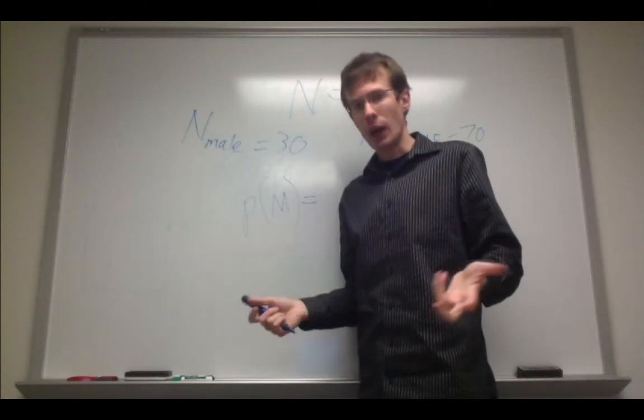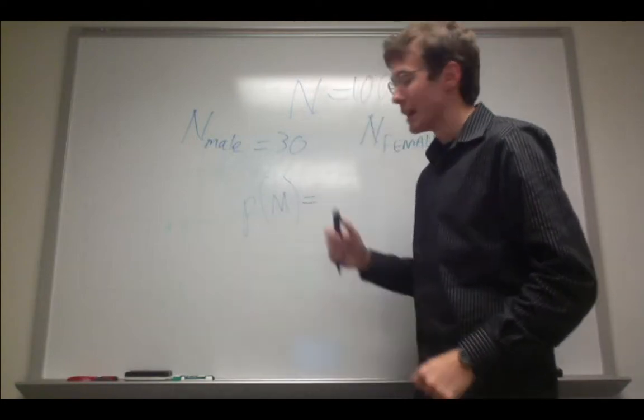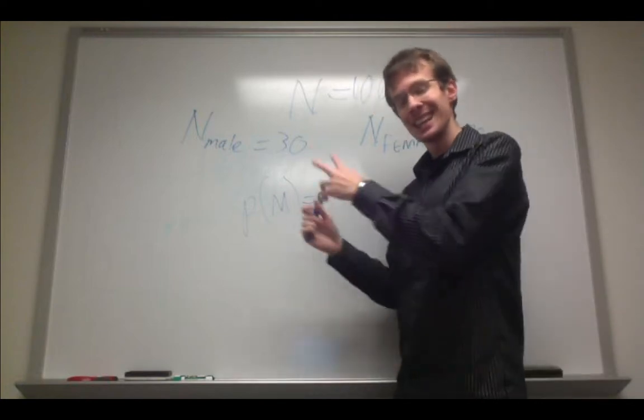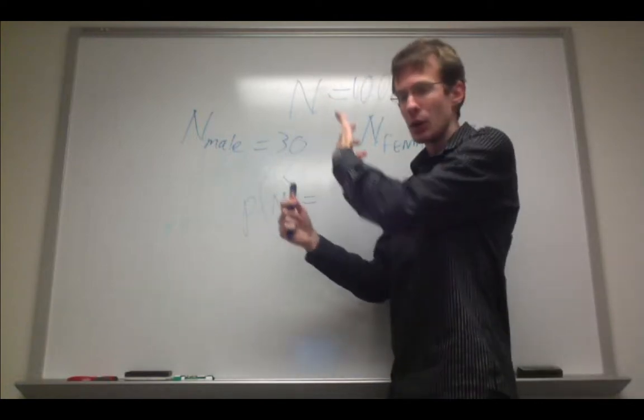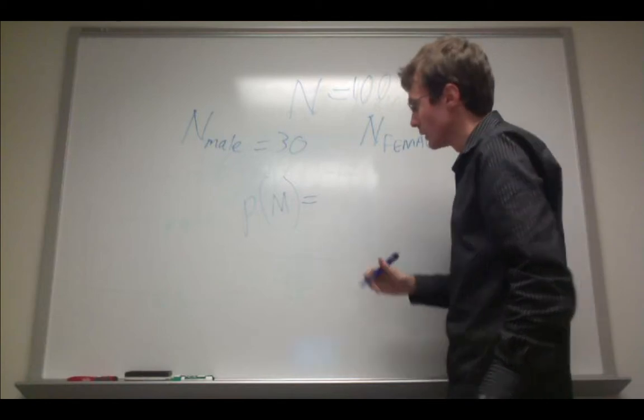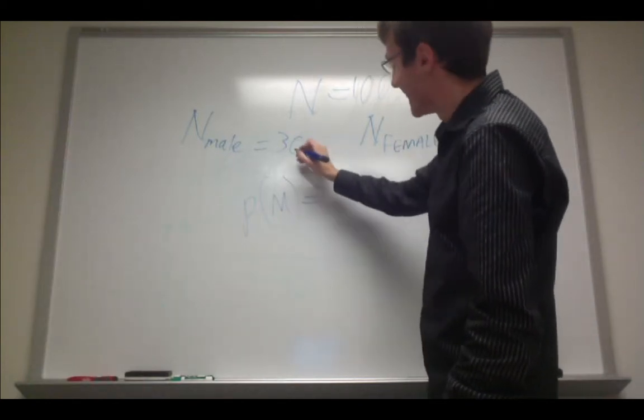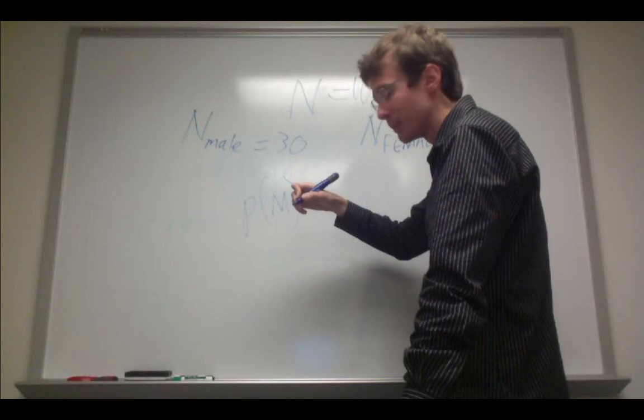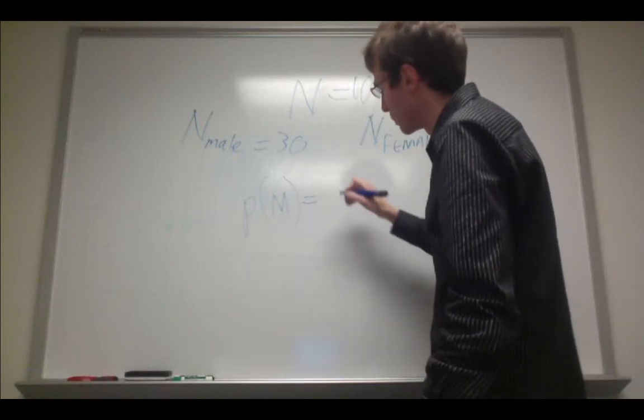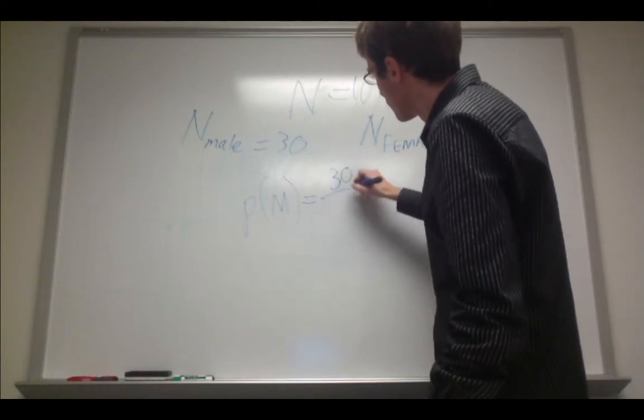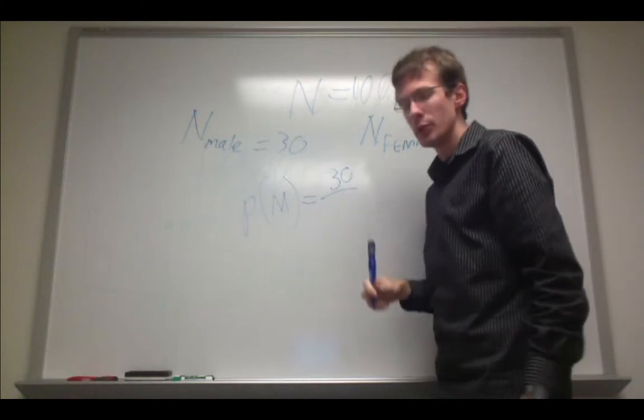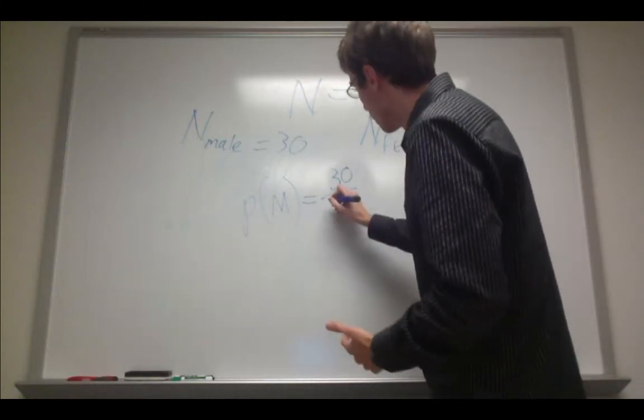When we talk about successful outcomes, we're talking about the events of interest. In this case, drawing a male at random from this population. So, this would be, in this case, 30, since there are 30 males in this sample, over the total number of individuals I might be able to select, which is 100.